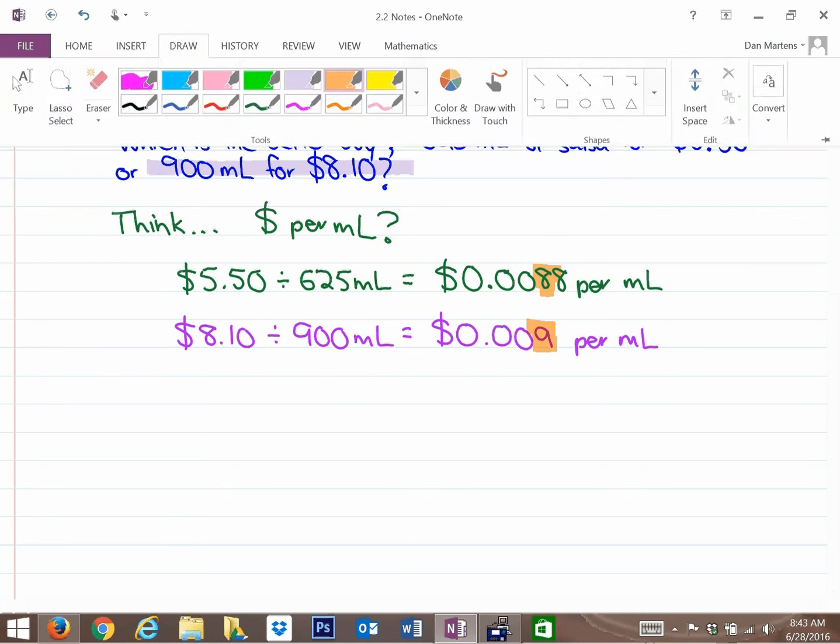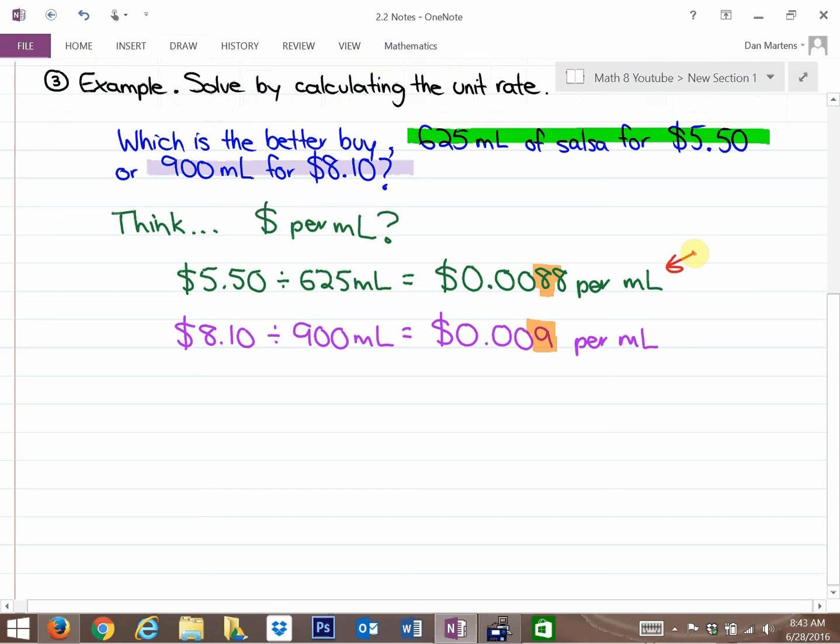So the one that's actually cheaper is the 0.0088. So that's cheaper per milliliter, so that's the better deal. So this is the best buy. And in brackets, what you're going to write is, it's cheaper per milliliter.